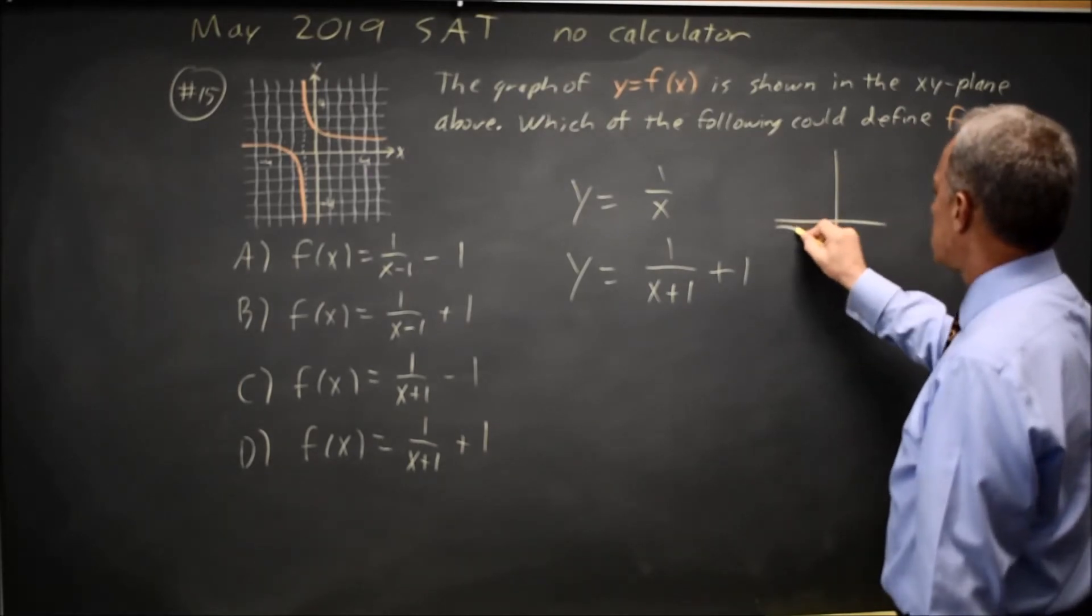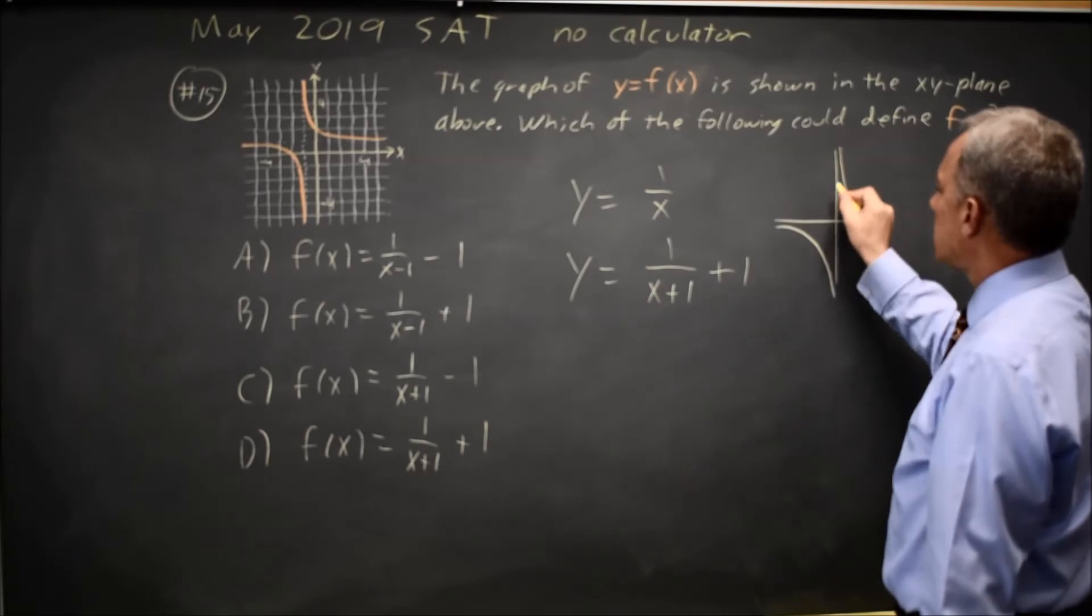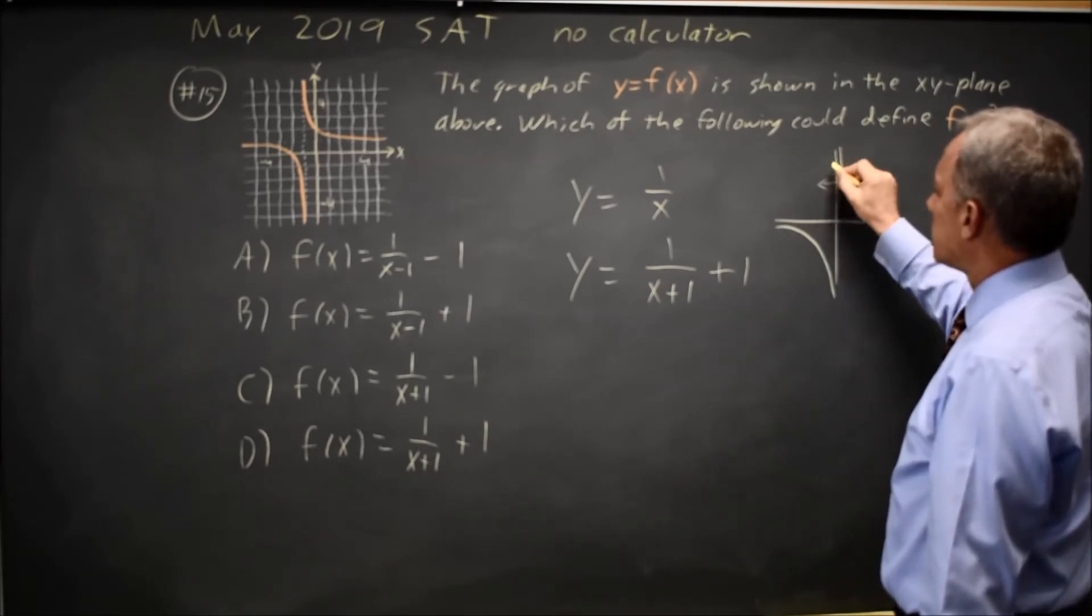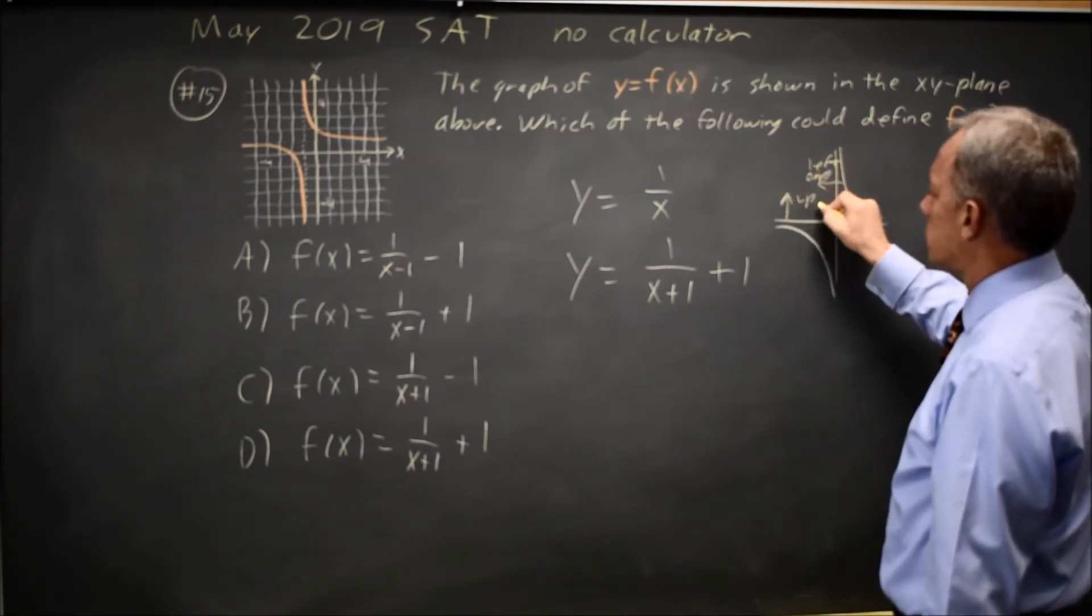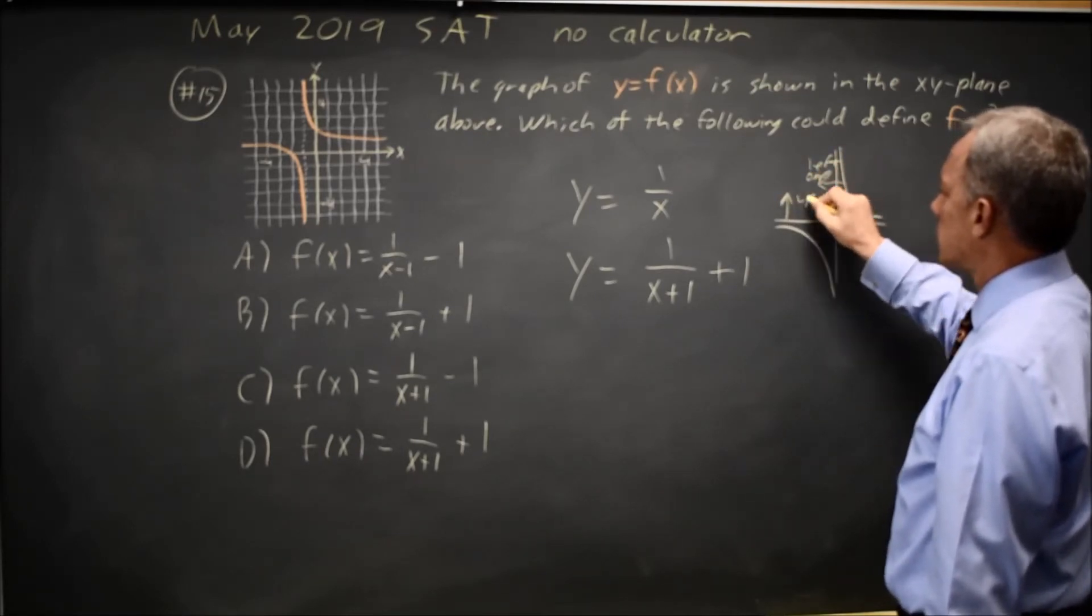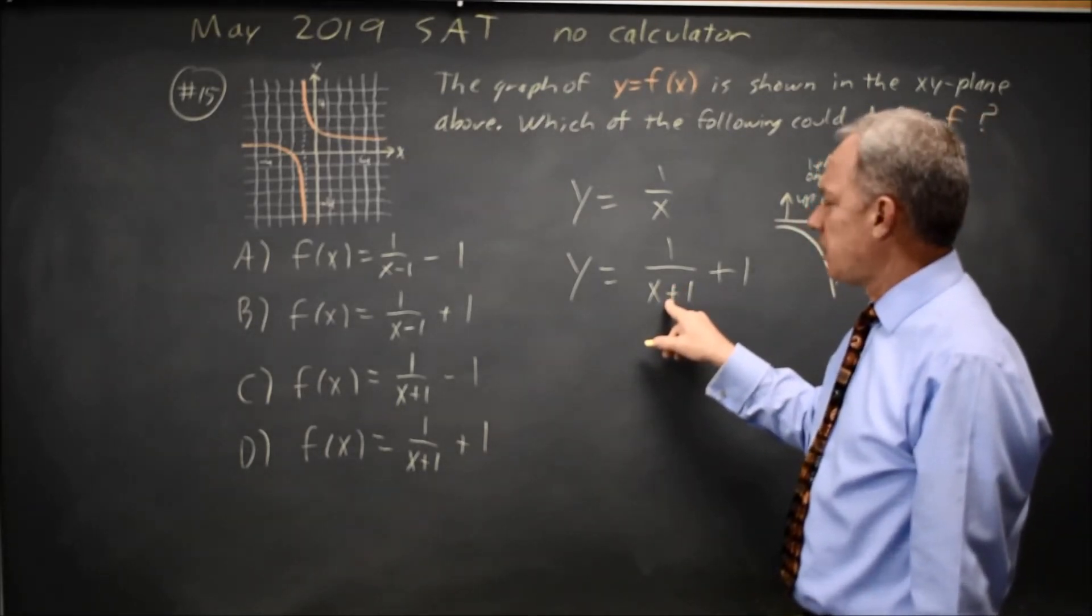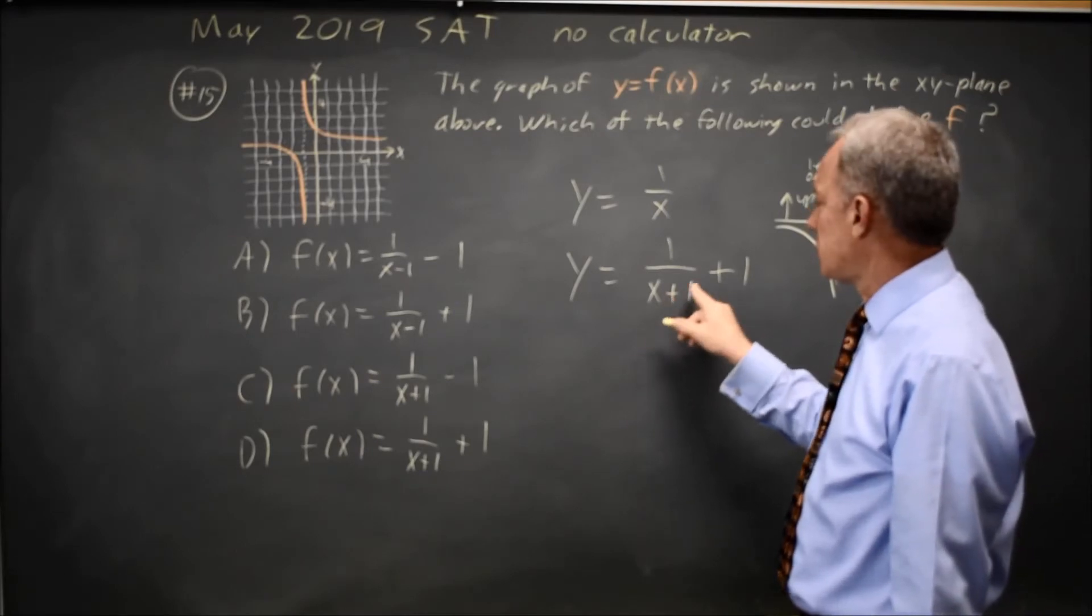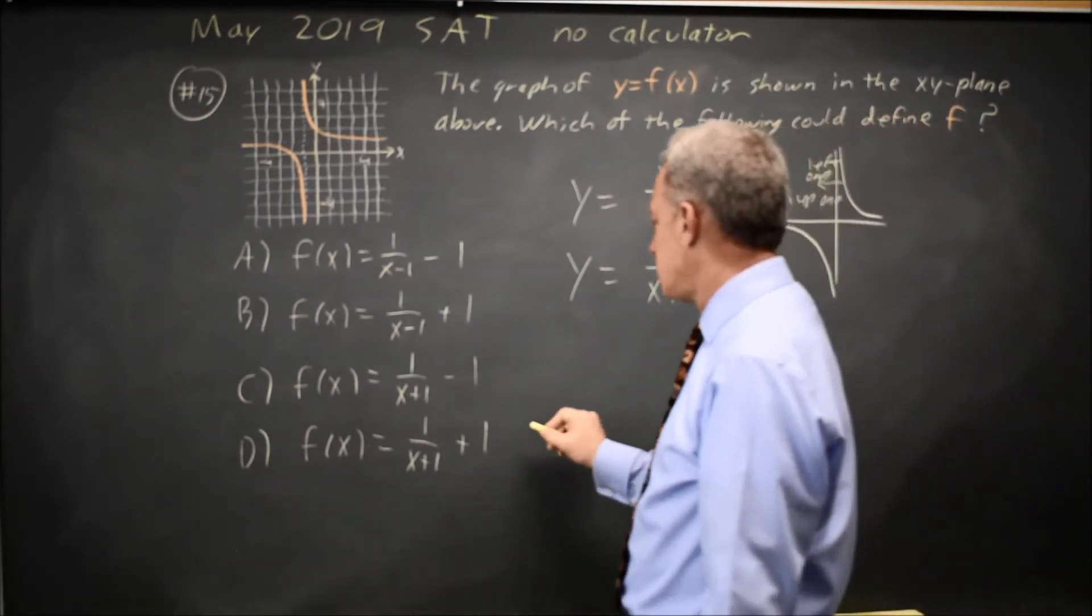So we're going from y equals 1 over x, left 1, and then up 1. Left 1, replace x with x minus h, where h is negative 1. And then up 1, you add 1 to your final answer. This is choice D.